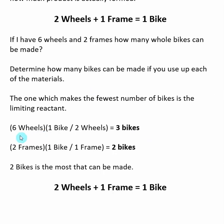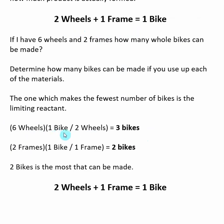We have a certain amount of our starting materials — our reactants — and we use the reaction to come up with mole ratios or conversions to convert reactants to products. In our first calculation, I have six wheels. If I use up all six wheels, how many bikes can I make? My reaction says that for every two wheels, I can make one bike. Using that as a conversion, the wheels cancel, and if I use up six wheels, I will make three bikes.